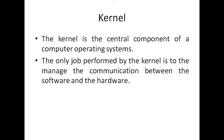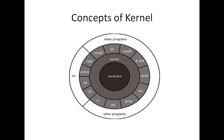Now let's understand the kernel from a graphical point of view. You can see there are a number of programs defined, and below this there are some Unix commands like COMP (compare command), date — to show the date and time of the system — and VI Editor for editing commands. Going further down, you will see the kernel, and its center point is hardware. From this graphical depiction, you know that the kernel sits at the hardware level.